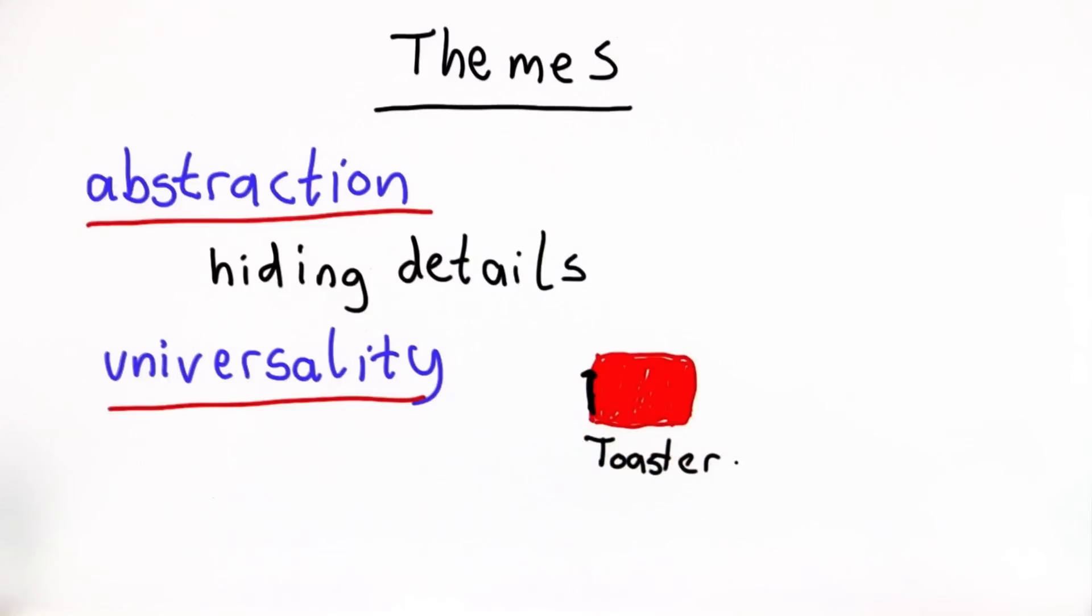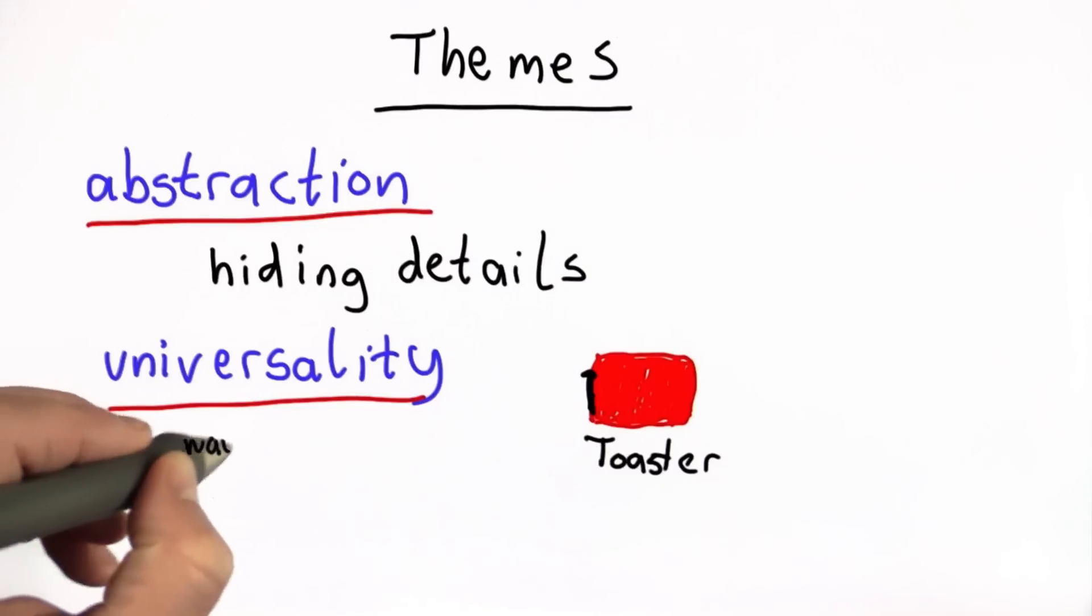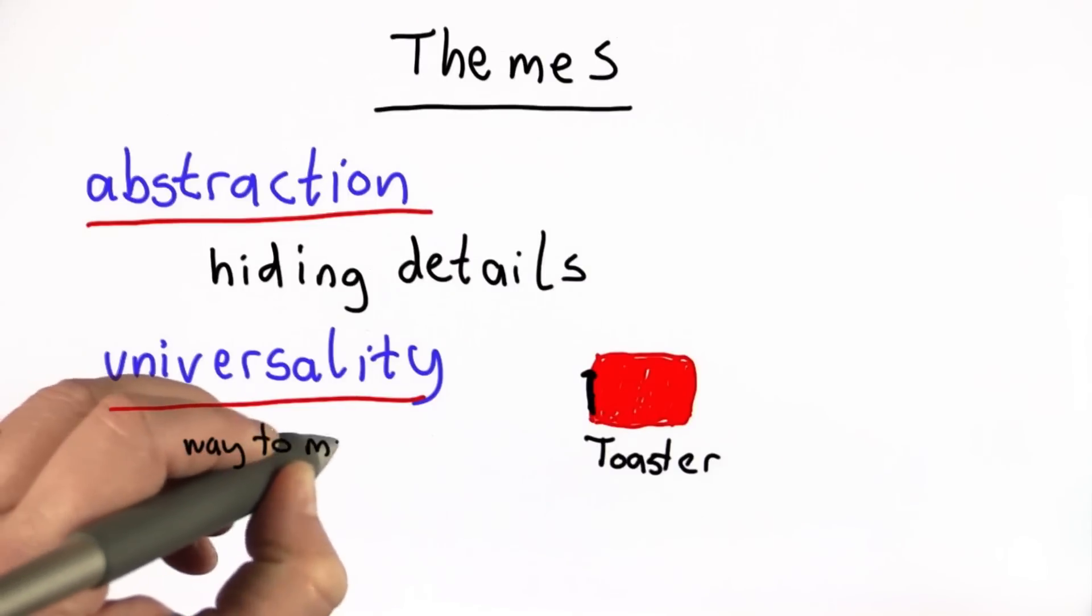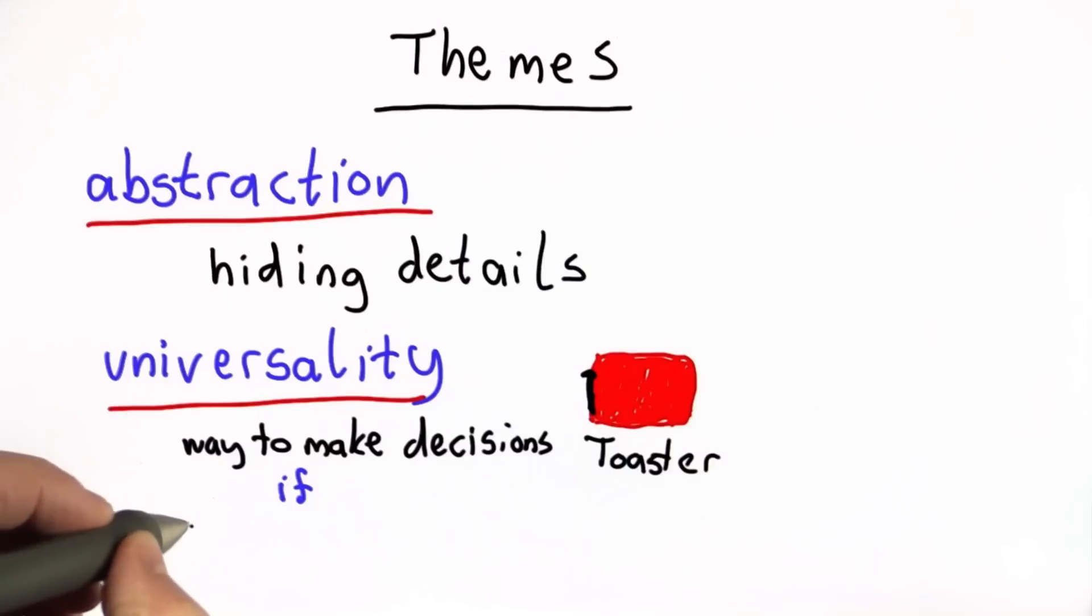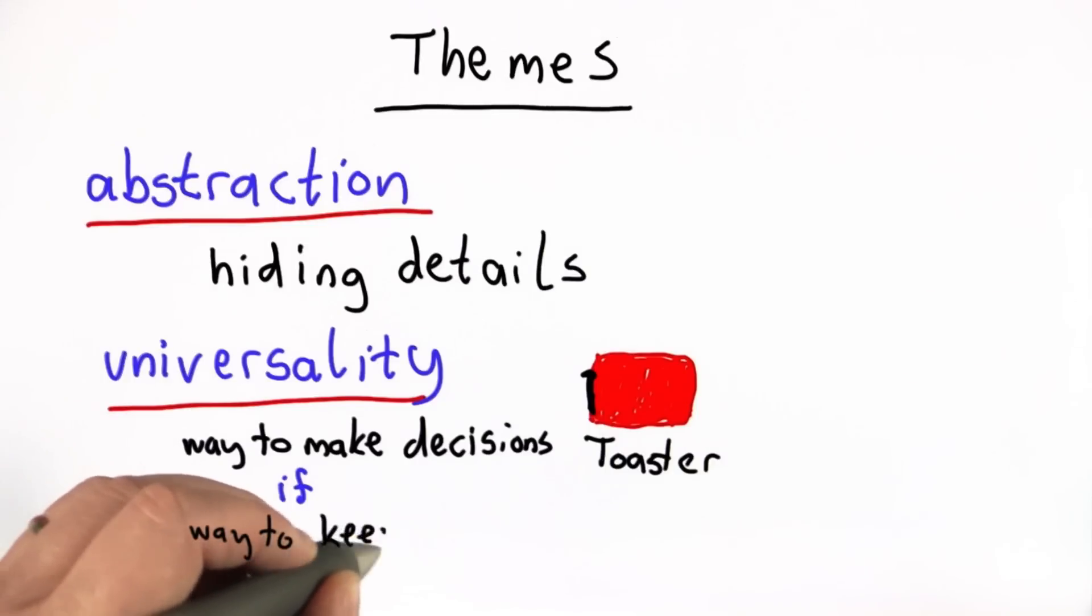A computer is a universal machine. And we've seen lots of examples of how a computer is universal. That we only need a few simple constructs to be able to define every possible program. We saw that if we had a way to make decisions, and we saw we have that with if in Python. We saw that if we have a way to keep track of things, and in Python we can do that using variables and data.